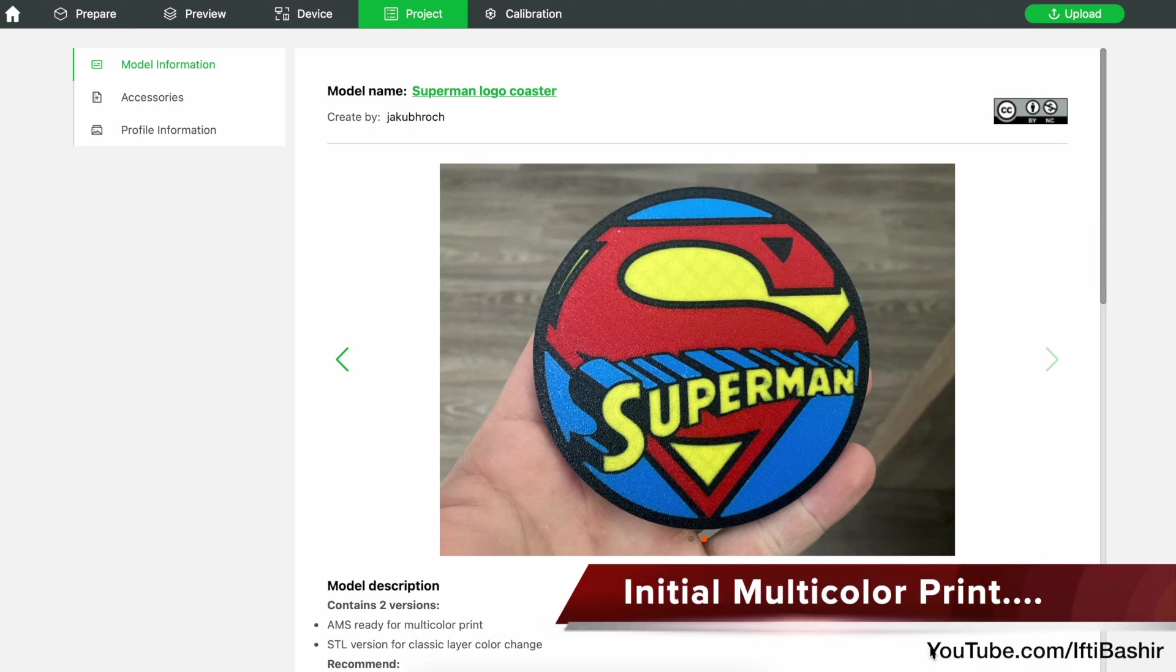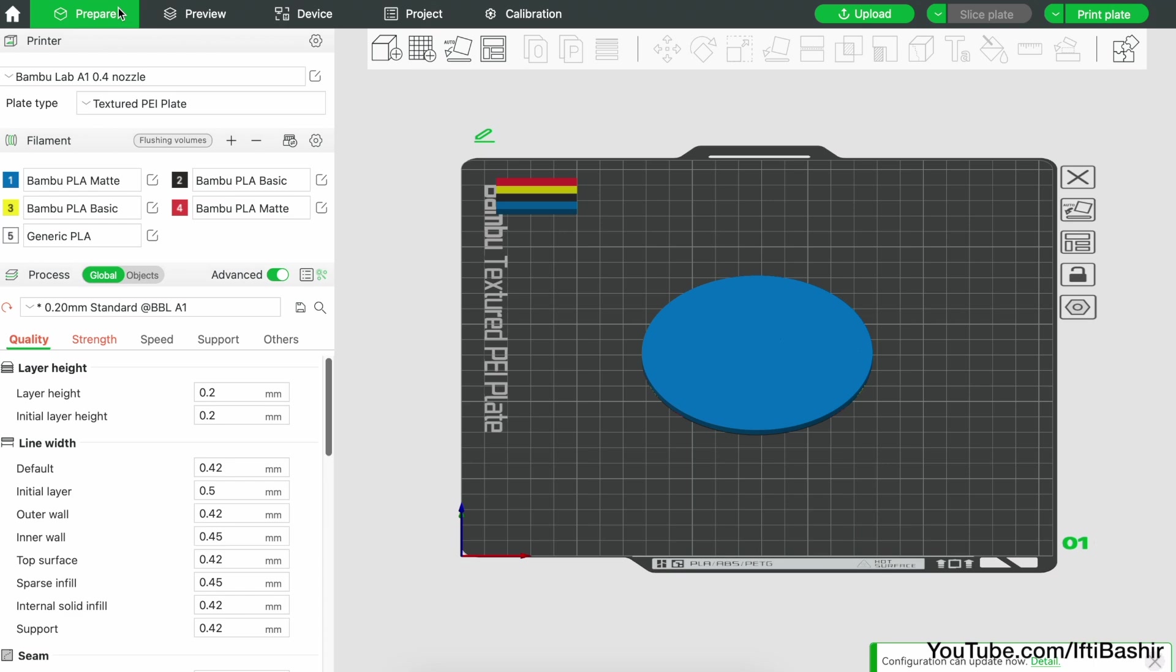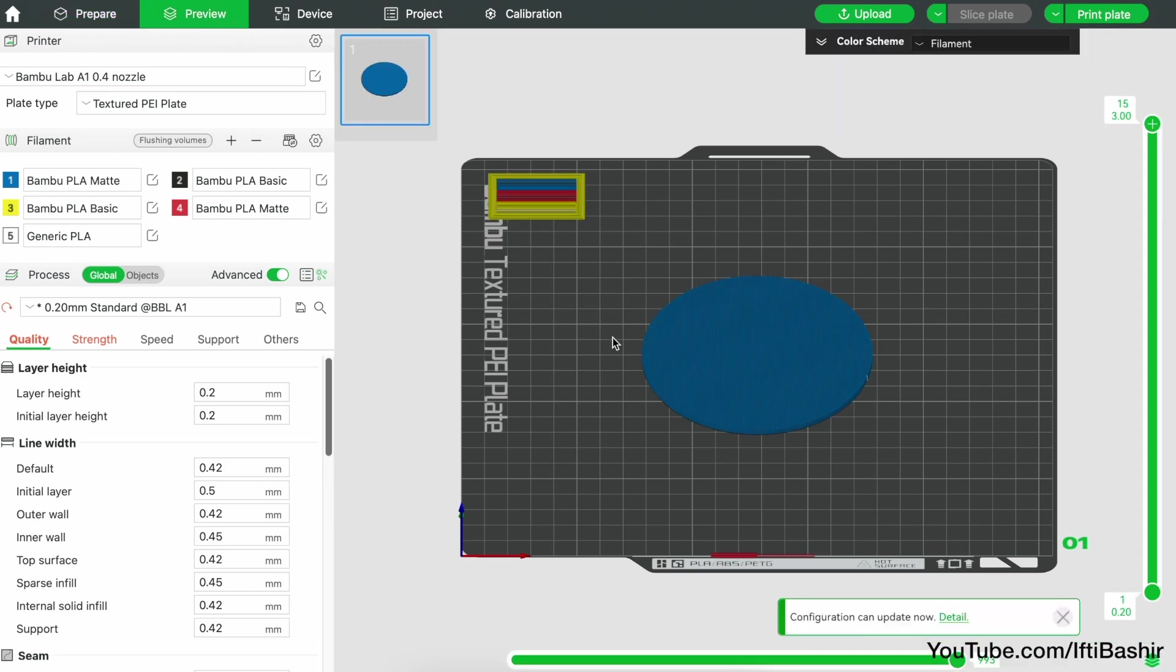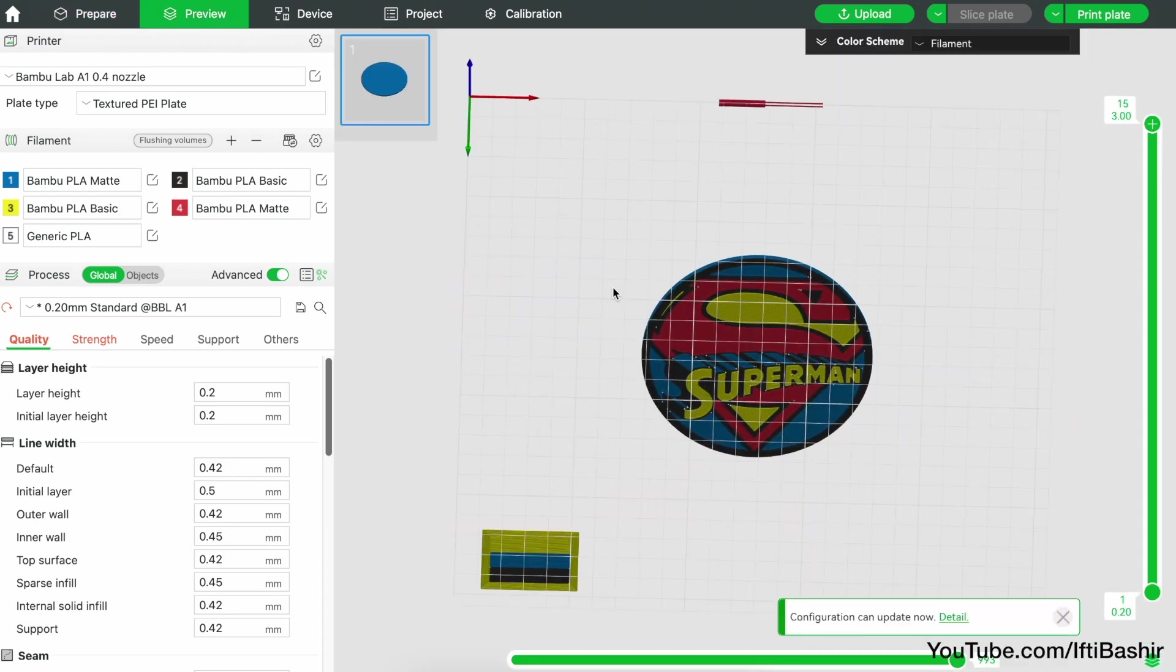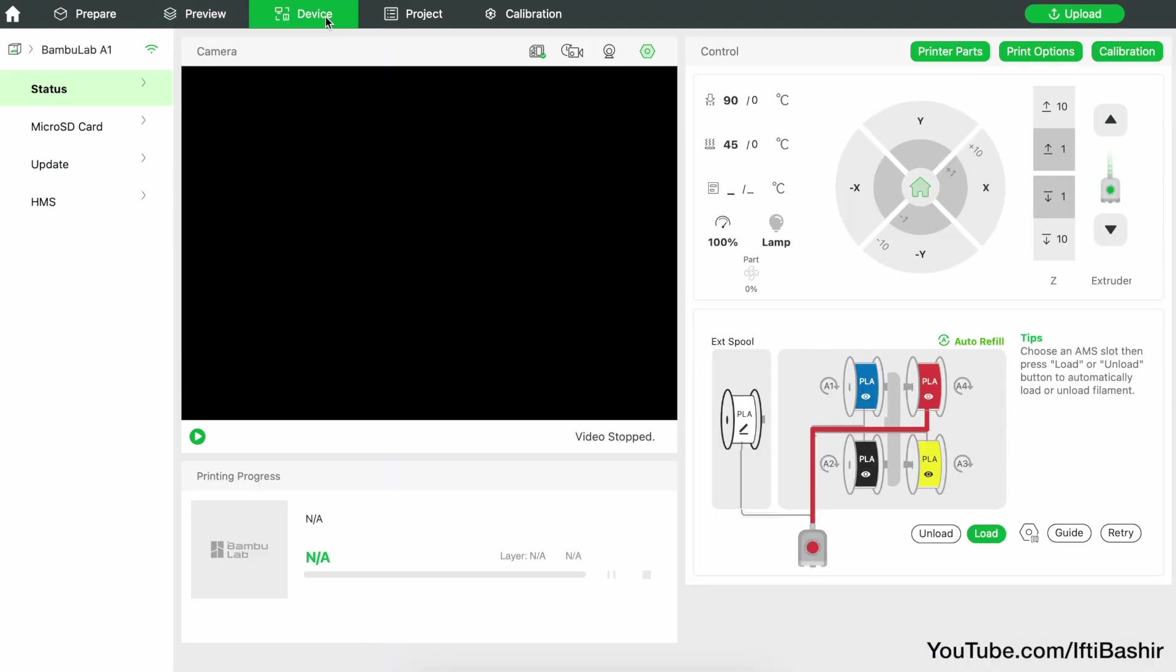So on it is to a multi-colour print then. I'm keeping it small and simple for the moment so we're going with a coloured coaster here which will help verify and test all four loaded spools. So you can quickly set any options and prepare the print job before sending it across to the printer.